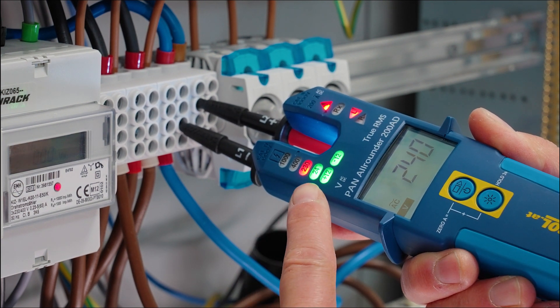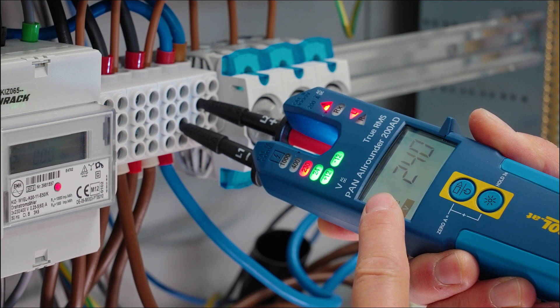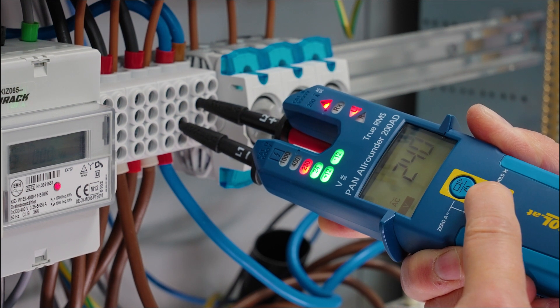The voltage range is shown on a bright LED display and the exact value on an LCD display. This value can be frozen in the display by the data hold button.